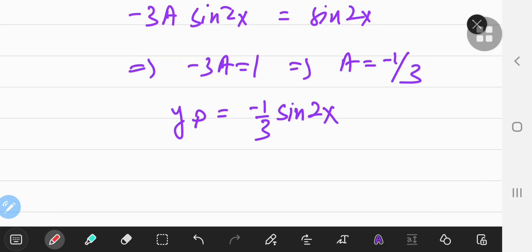Our complete solution, the complete solution is going to be the characteristic one, which was c1 cos x plus c2 sin x minus 1 by 3 of the sine of 2x.